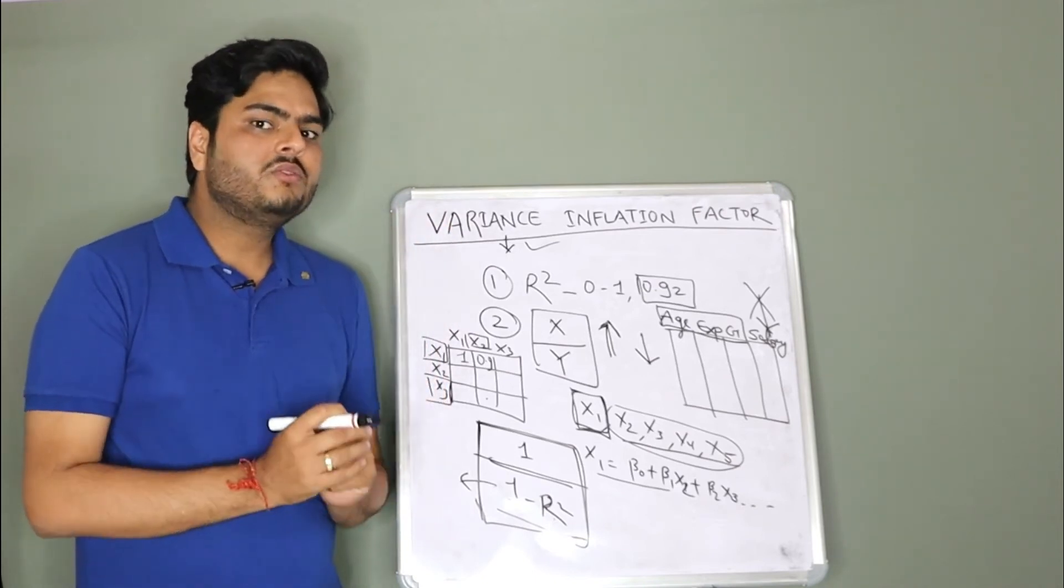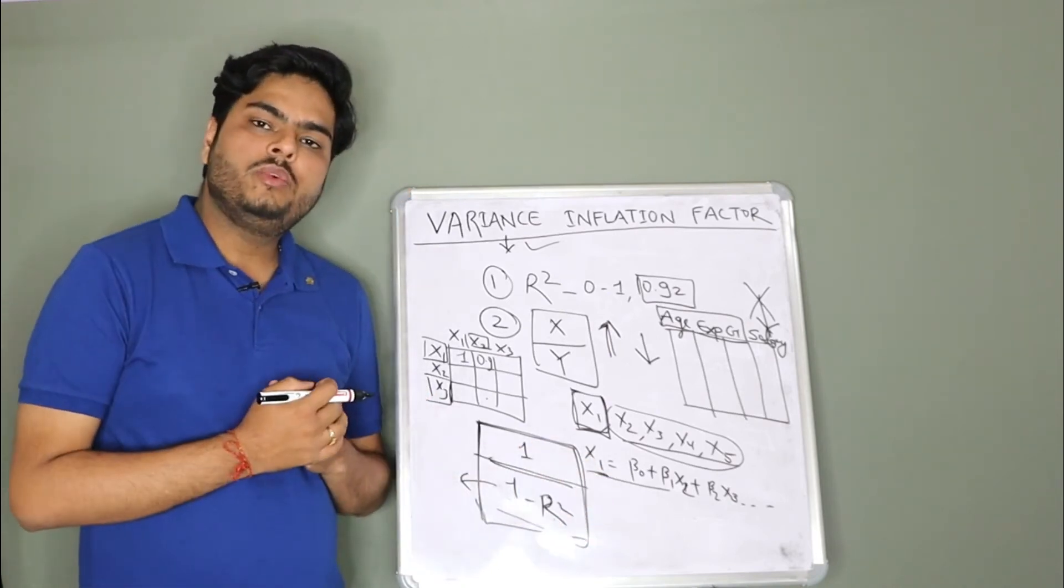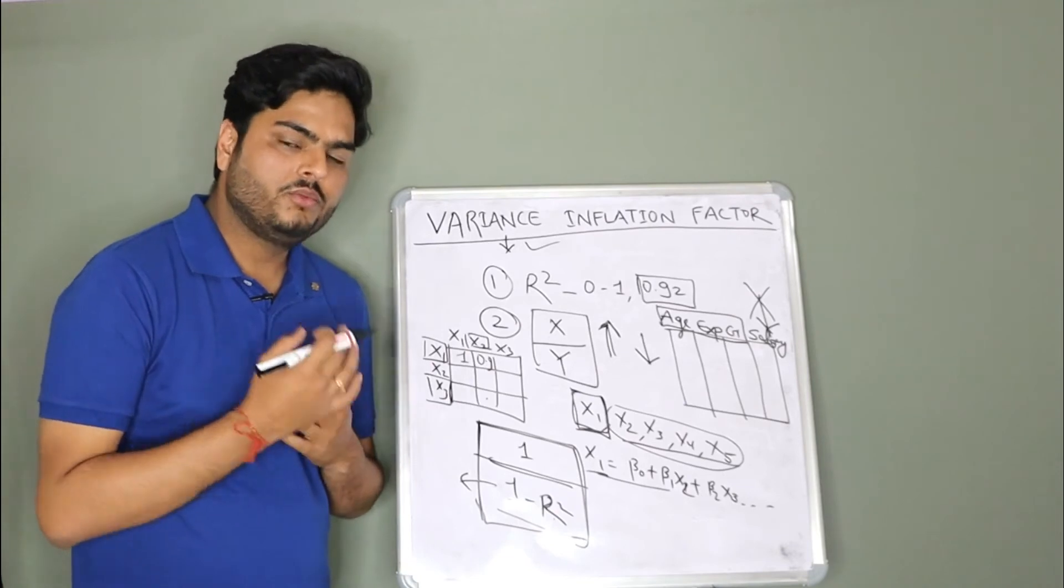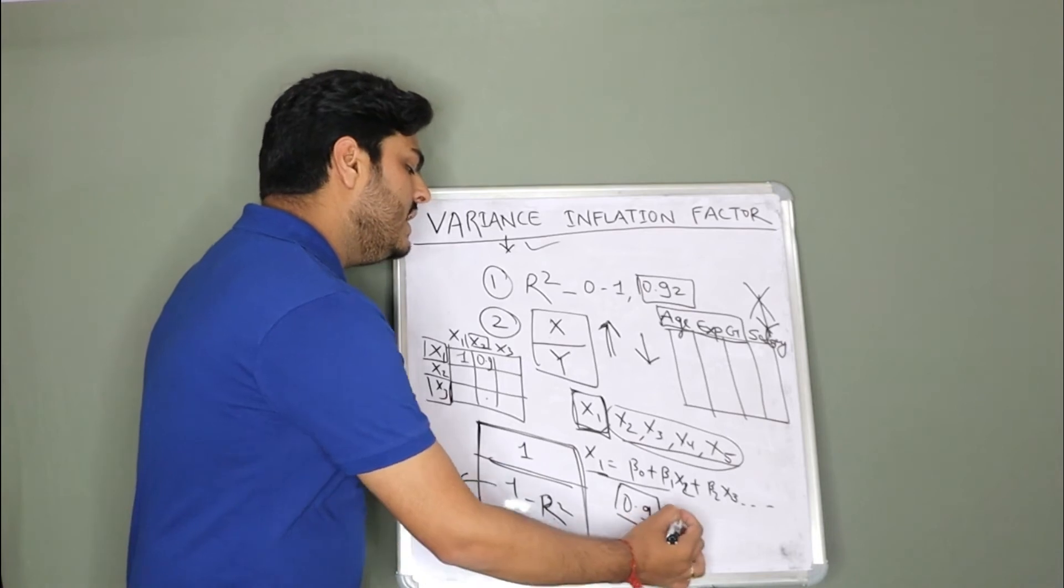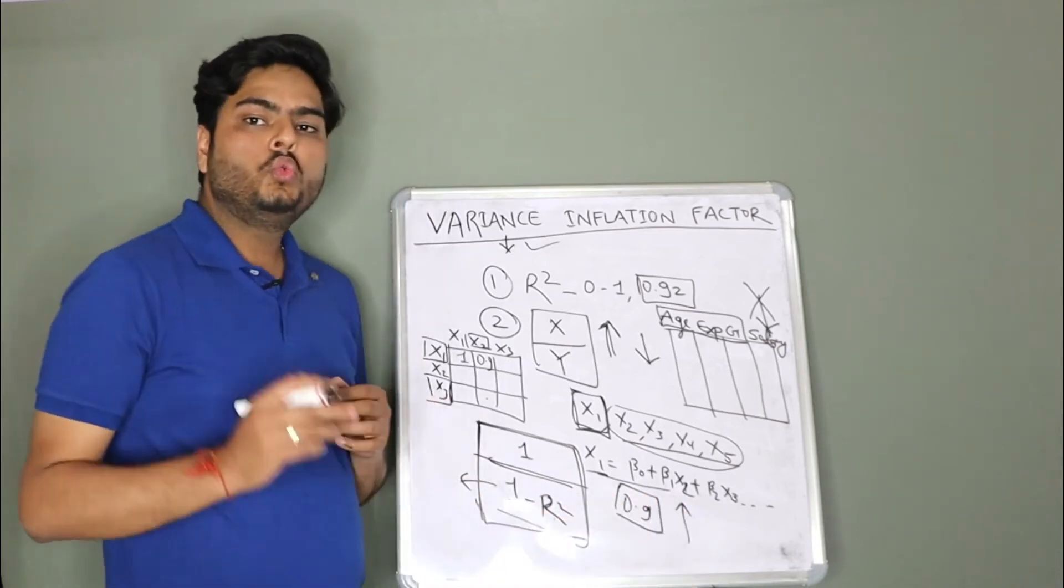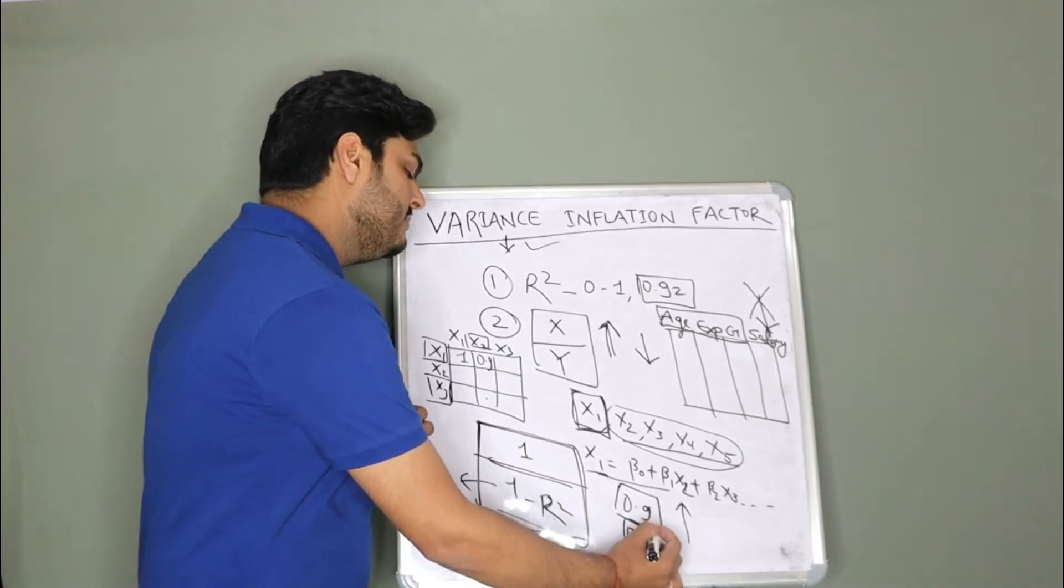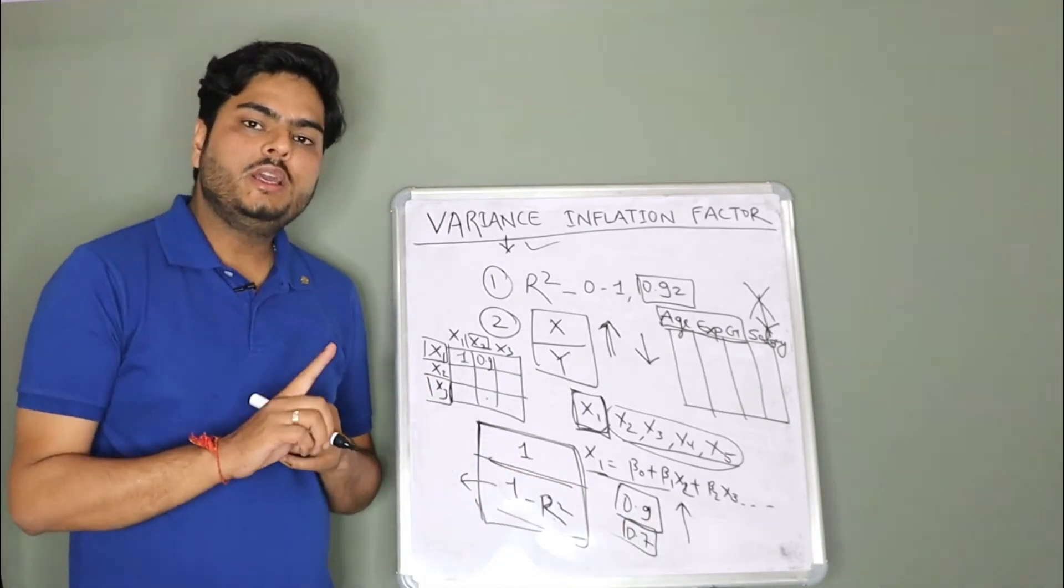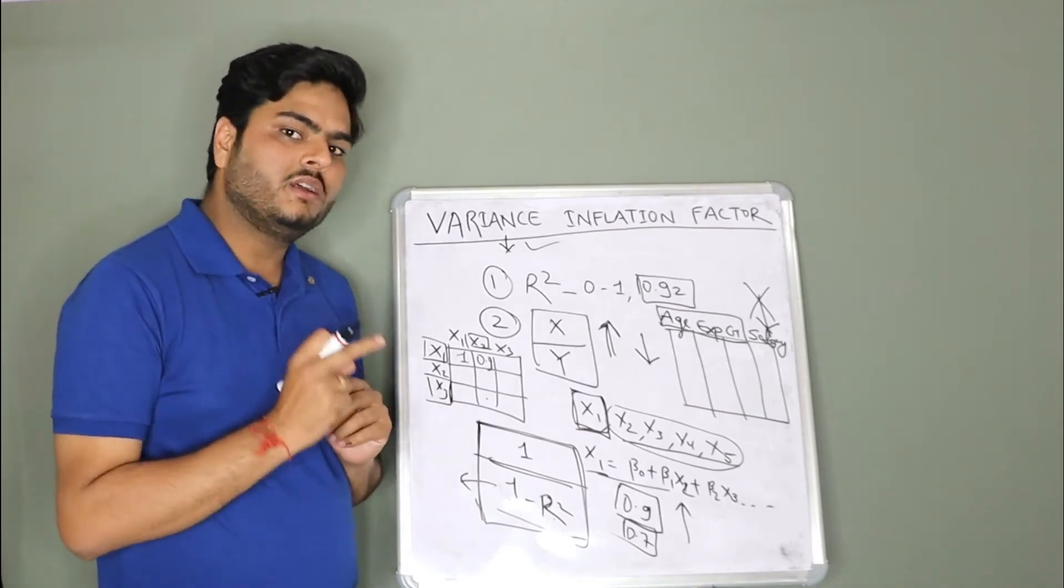So what will happen in that case? VIF for a higher R square model, VIF value will be high. For example, if the R square value is 0.9, then you will see a higher VIF with respect to if your R square is 0.7. Similarly, you will have a VIF number for all your independent features in the data.